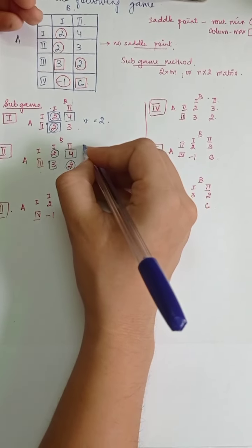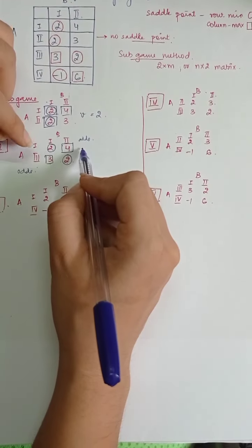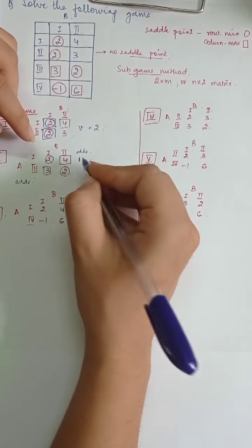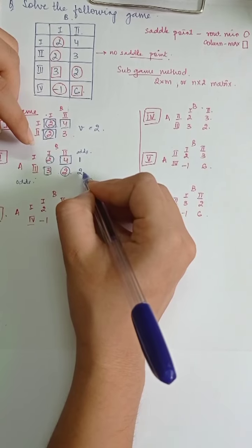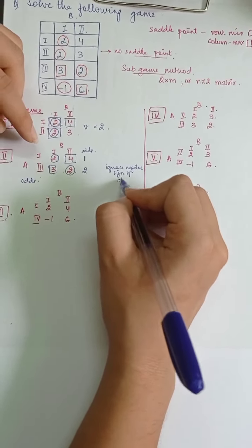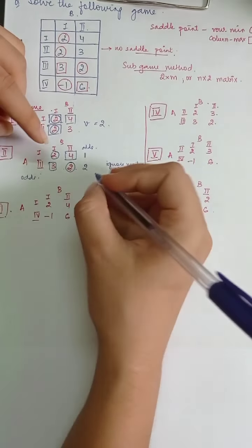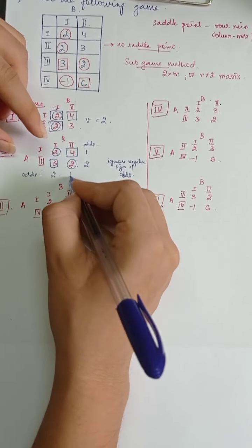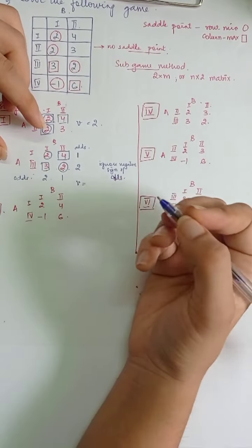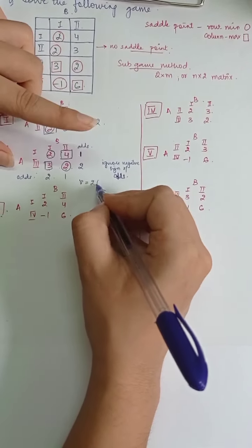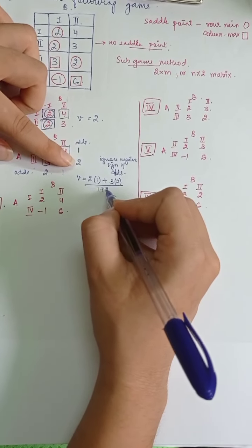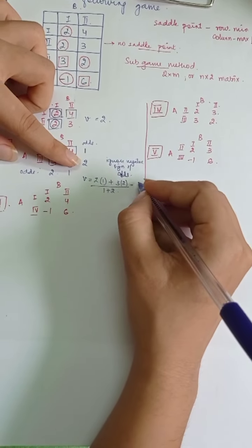For the odds method, we calculate the odds. For A1: 3 minus 2 = 1. For A3: 2 minus 3, we write 2 because we ignore the negative sign of odds. For B: the odds are 4 minus 2 = 2 and 2 minus 3, giving 1. The sum of odds is 1 + 2 = 3. The value of the game is (2×1 + 3×2) / (1+2) = (2+6) / 3 = 8/3.